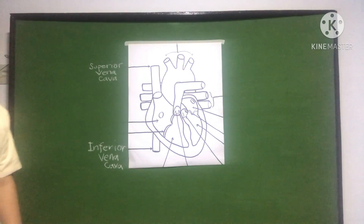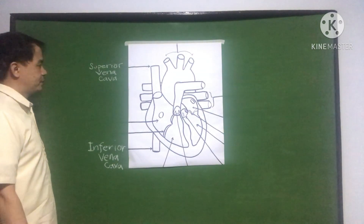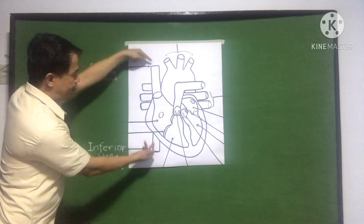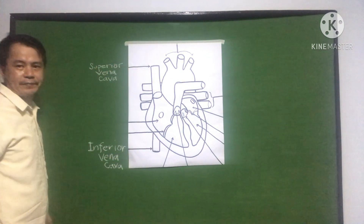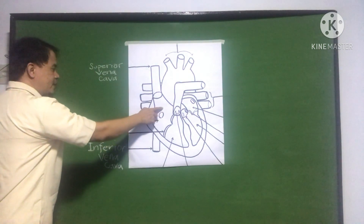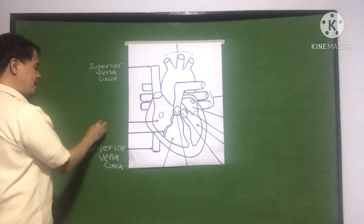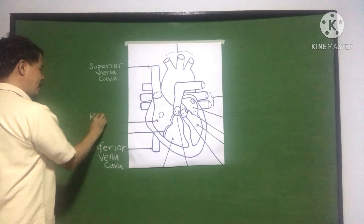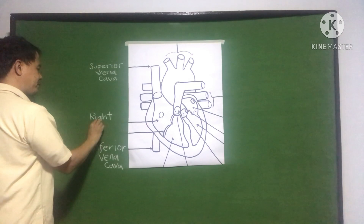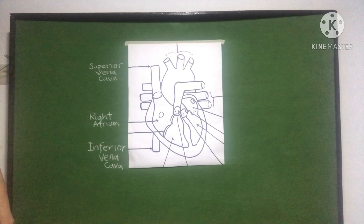Inferior vena cava. Now, both of these enter together — the superior vena cava and the inferior vena cava come in at the same time, and the blood goes into the area called the right atrium.